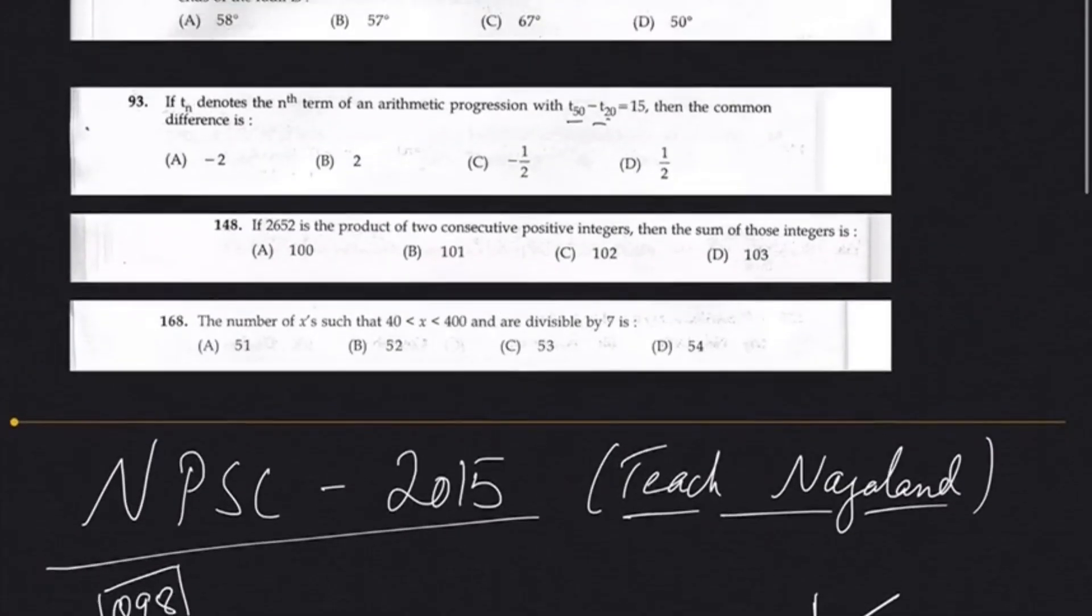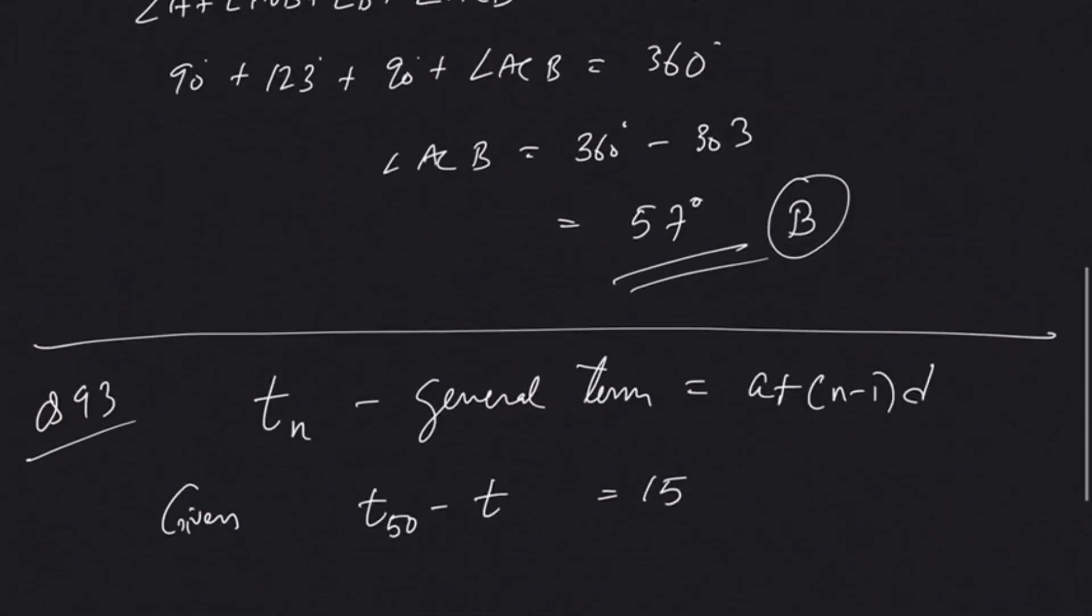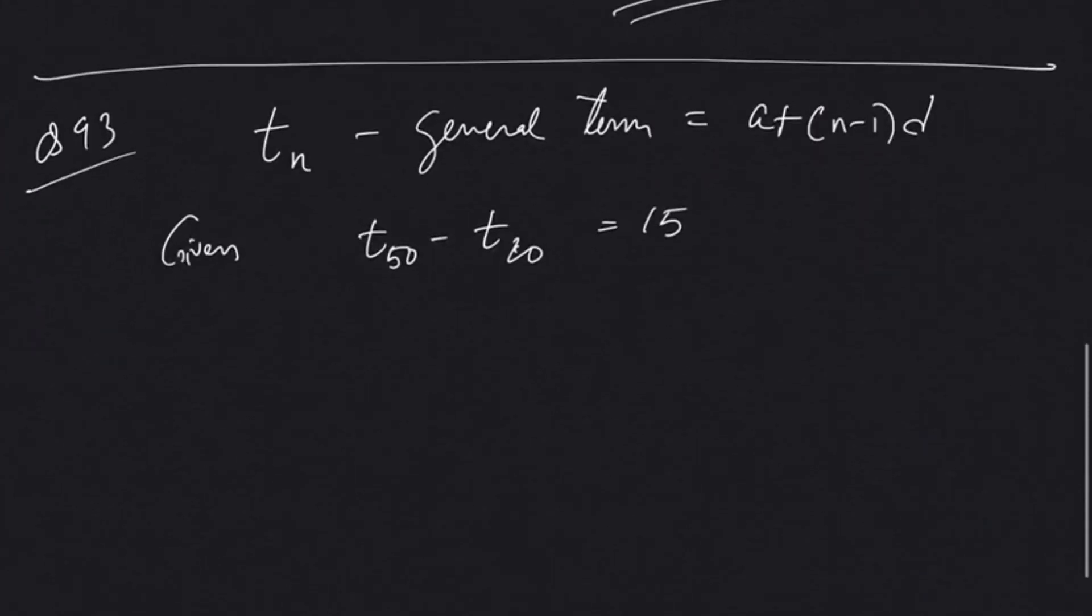The difference between the 50th and 20th term: the 50th term will be a + (50-1)d minus [a + (20-1)d], if we use this concept, equals 15. Let's quickly solve: a + 49d - a - 19d = 15.